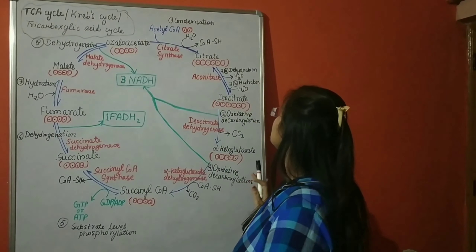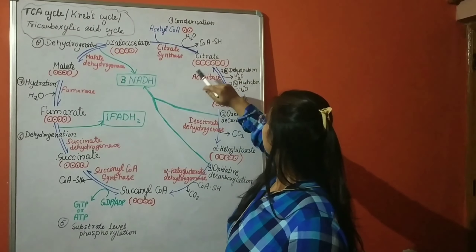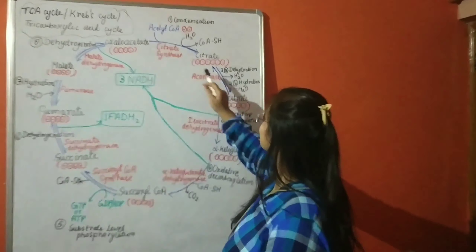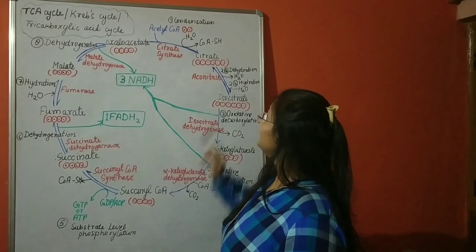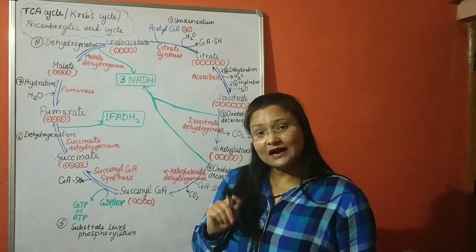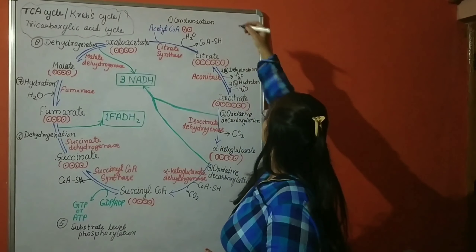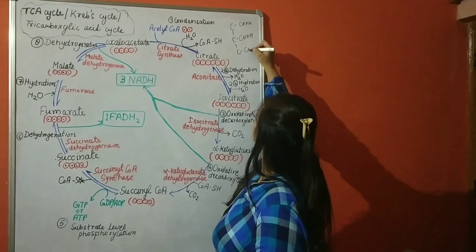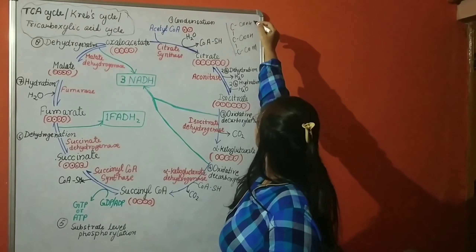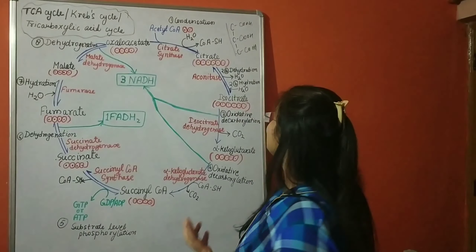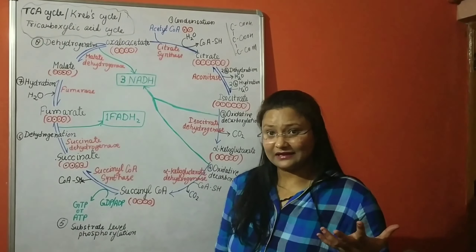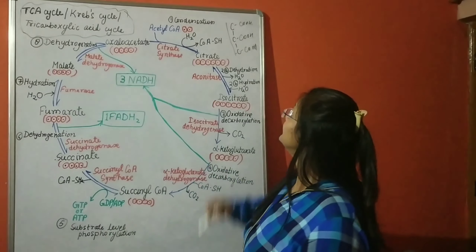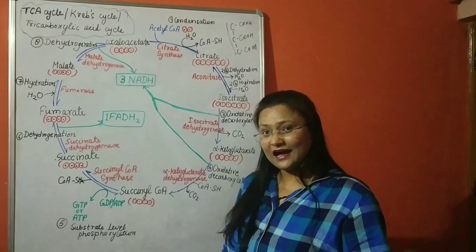Both acetyl-CoA and oxaloacetate react together in a condensation reaction catalyzed by the enzyme citrate synthase, forming a six-carbon compound called citrate. Citrate has a backbone of three carbons, with one carboxylic acid (COOH) group attached to each carbon. That is why this is called the tricarboxylic acid cycle — citrate is a six-carbon compound with three carboxylic acid groups.